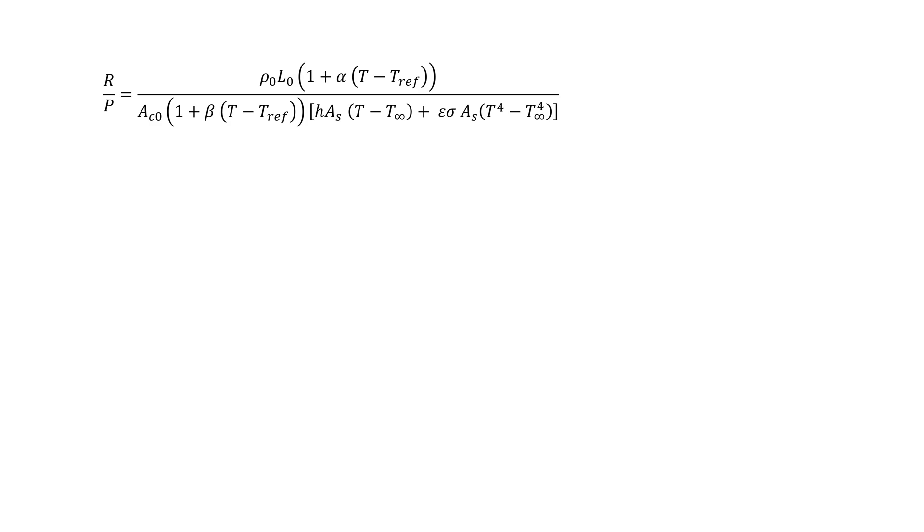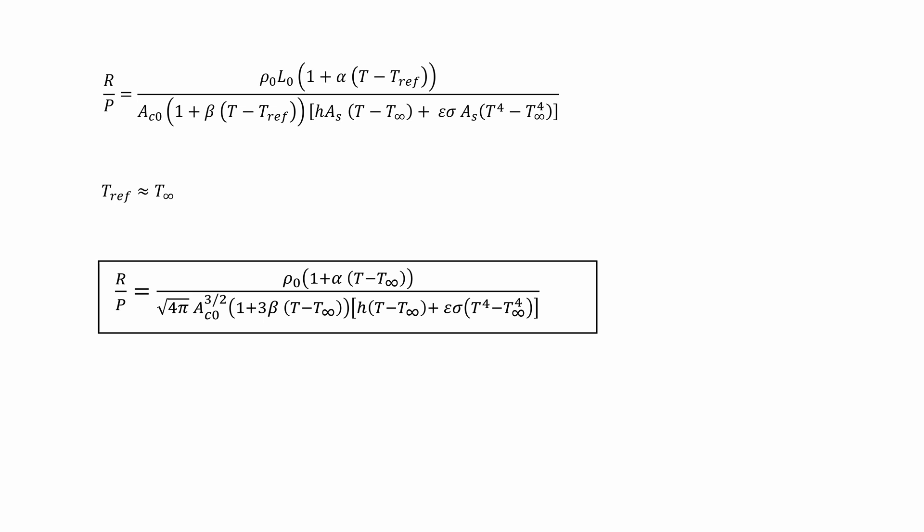Finally, we combine everything to find the resistance over power as a function of temperature. What can we see from this equation? Well, let's take a look at the asymptotic behavior of this function and see if it matches with our trend in our measurement.